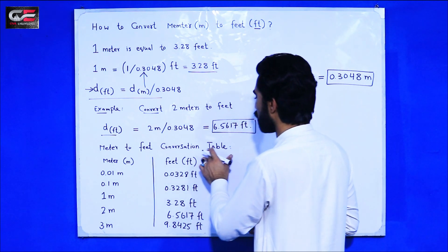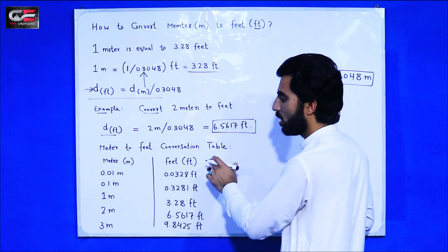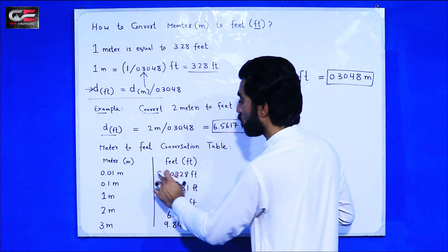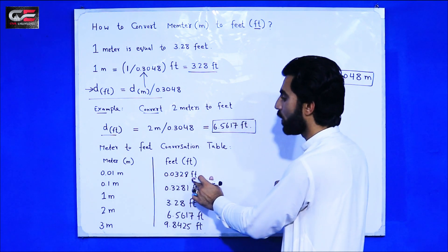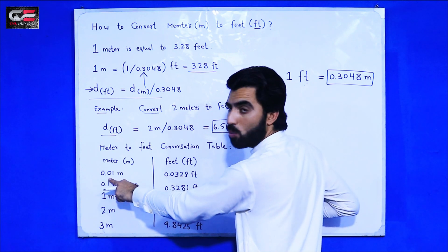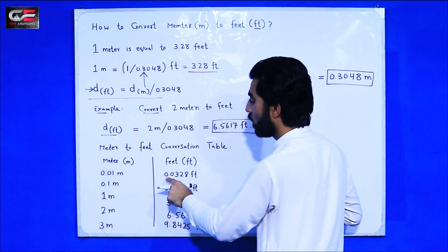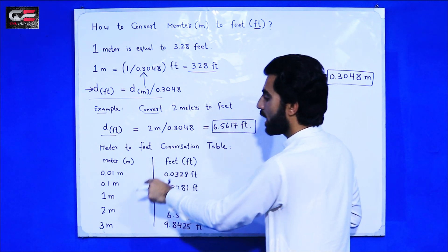Now guys, meter to feet conversion table. Here is meter, here is feet. So 0.01 meter is equal to 0.032 feet. How? When you divide this number by 0.3048, you will get this value in feet.